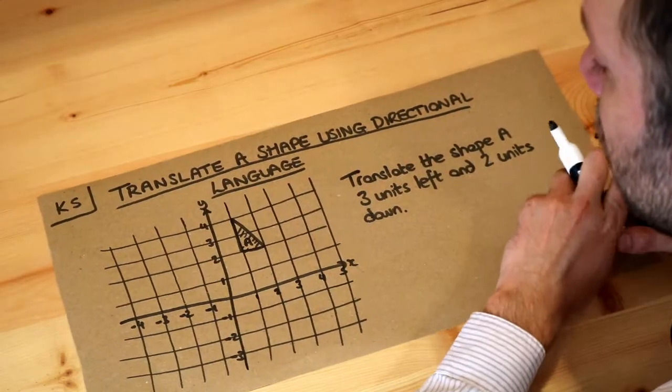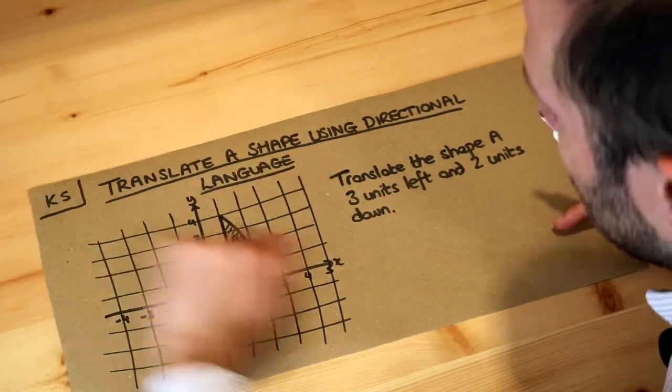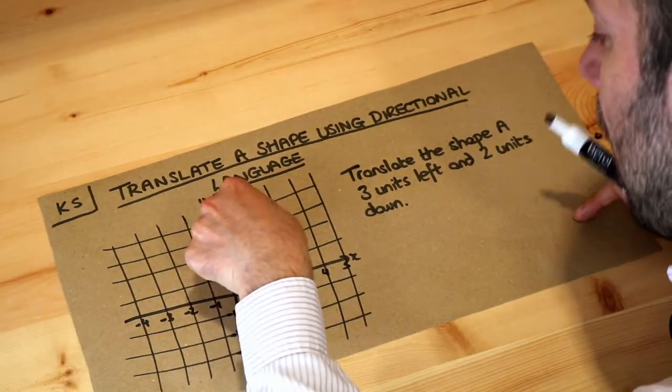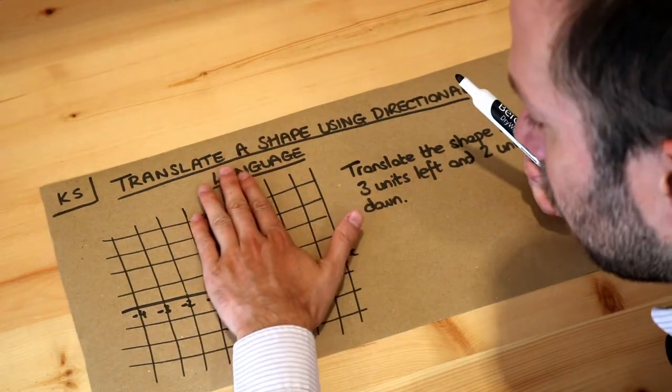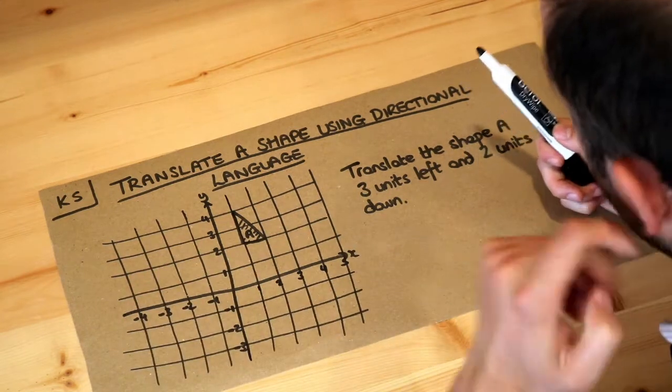To translate a shape just means to shift it across without spinning it or making it bigger or smaller. So if we took shape A and shifted it across without spinning it to another point on the axis, that would be a translation.